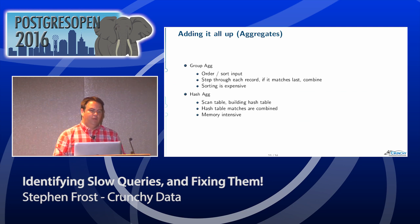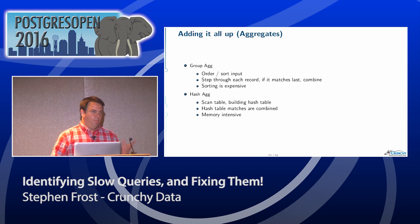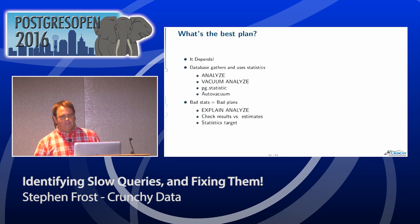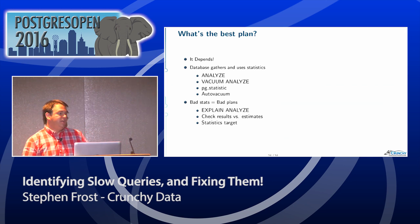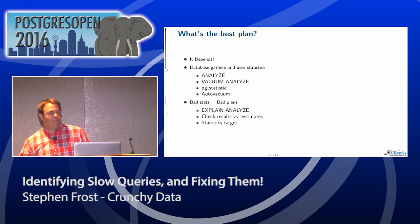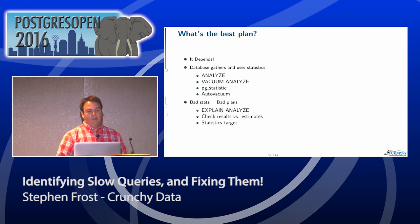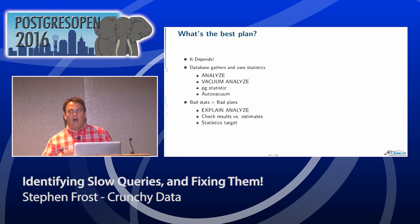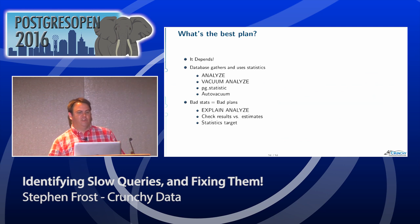What's the best plan? It all depends. The database tries to figure out the best plan by gathering statistics using ANALYZE or VACUUM ANALYZE. You can look at what those statistics are inside of the pg_statistic table. Auto-vacuum also gathers statistical information. Bad stats equal bad plans, so you'll want to look at EXPLAIN ANALYZE results and check your results versus what Postgres estimated. In many cases you may want to increase your statistics target, or figure out why you're getting bad stats — why is Postgres getting the wrong answer for how many rows are expected to come back?